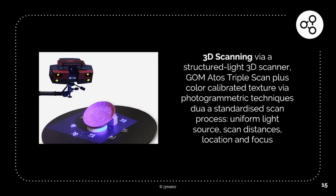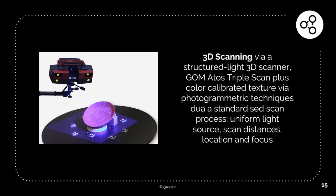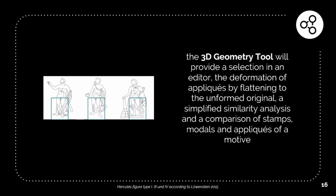We use the GOM ATOS Triple Scan in some kind of standardized scan process. We're also on the way to develop some kind of geometry tool to do selection in an editor, a web-based editor, and try to do some simplified analysis. We also compare different parts of the objects. More on that, there will be a talk by Carina on Friday, I think it's S45. If you're interested in the 3D stuff, just join her talk.